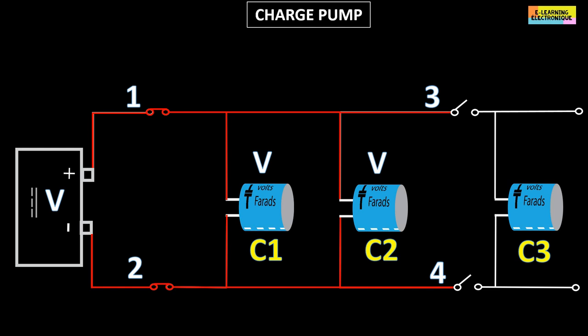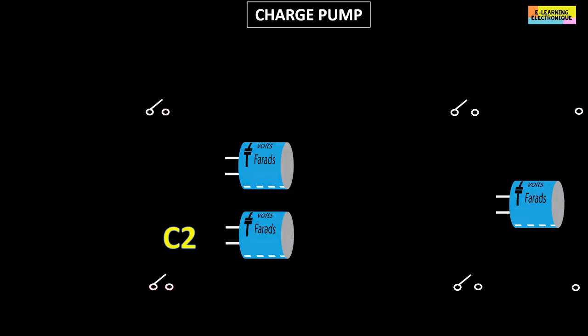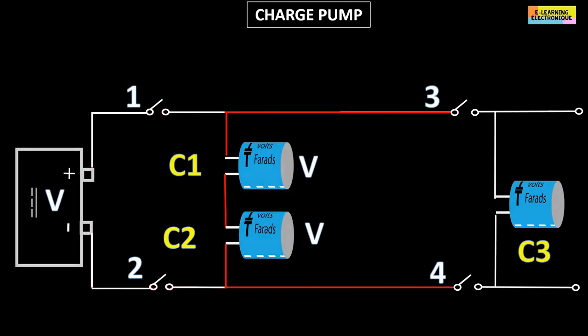The two capacitors C1 and C2 are then disconnected from the current source by opening the switches number 1 and 2. The circuit is rearranged so that the capacitors C1 and C2 are in series, according to this diagram. When switches number 3 and 4 are closed, capacitor C3, called the output capacitor, is in turn charged to the value of 2 times V.